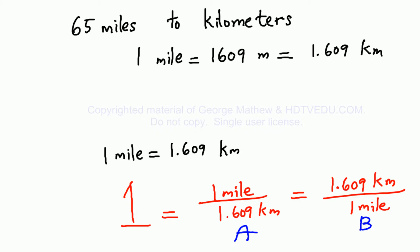Any number divided by itself is equal to one, correct? One mile divided by one mile is one. What is one mile divided by whatever is equal to one mile in kilometers? That's also equivalent to one.